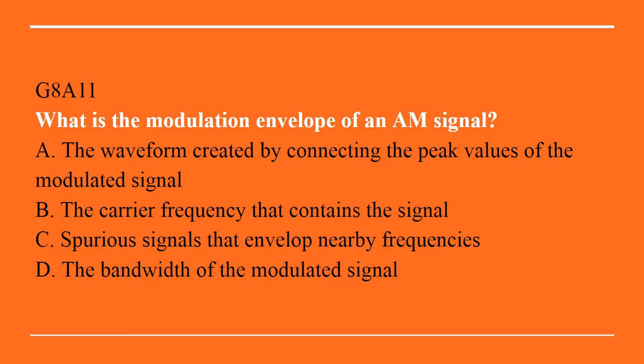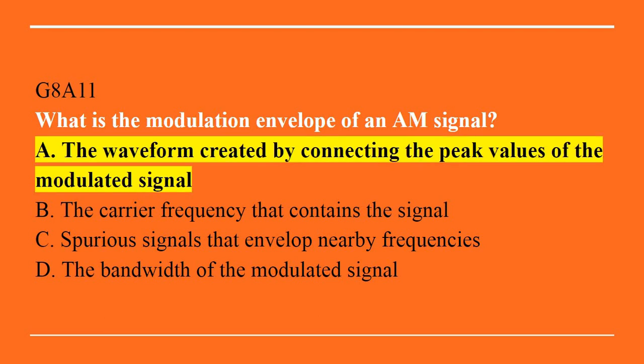G8A11: What is the modulation envelope of an AM signal? A. The waveform created by connecting the peak values of the modulated signal. B. The carrier frequency that contains the signal. C. Spurious signals that envelope nearby frequencies. D. The bandwidth of the modulated signal. Correct answer is A. The waveform created by connecting the peak values of the modulated signal.